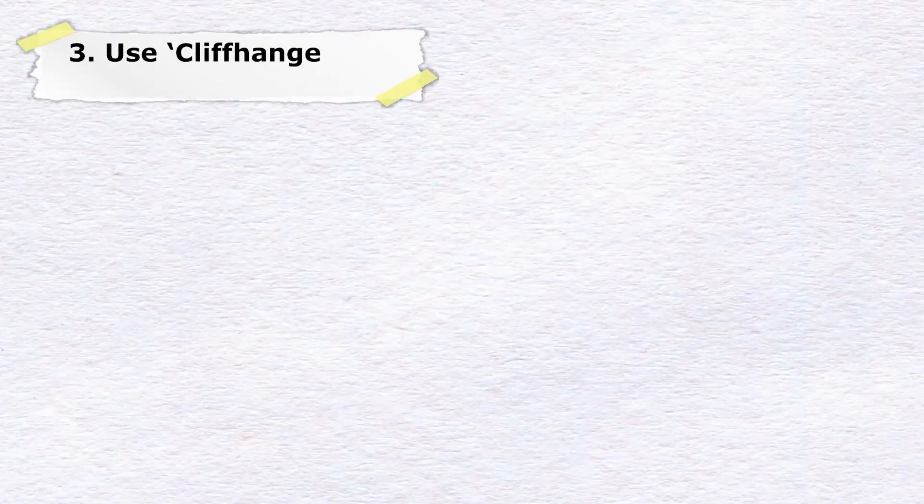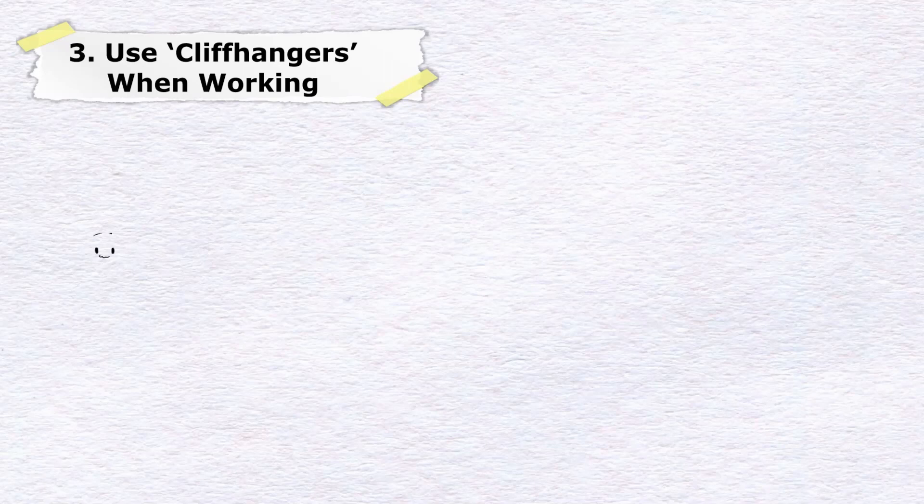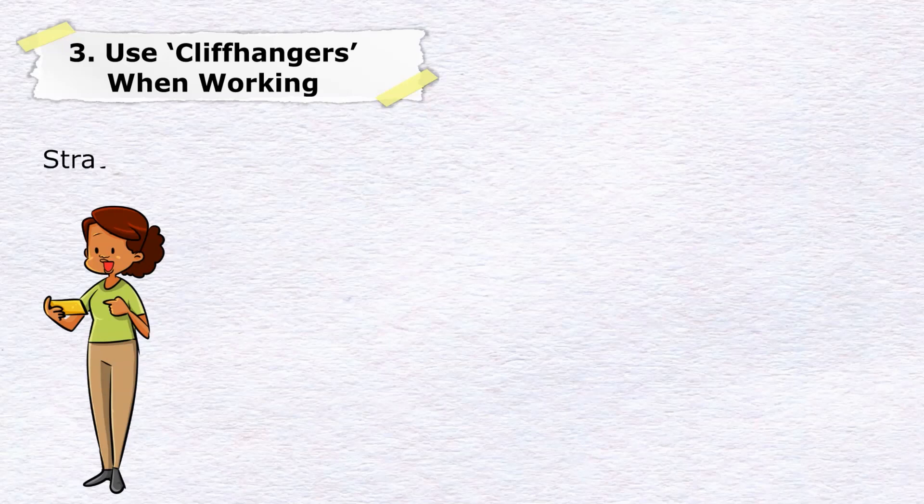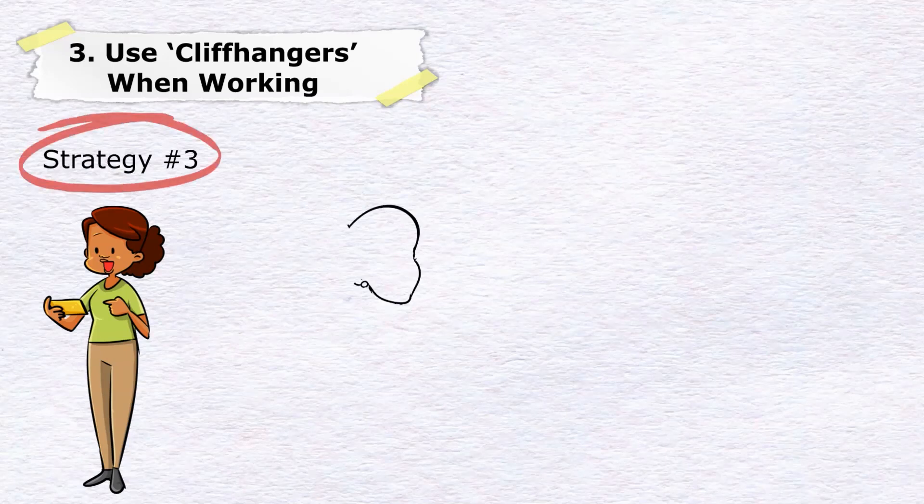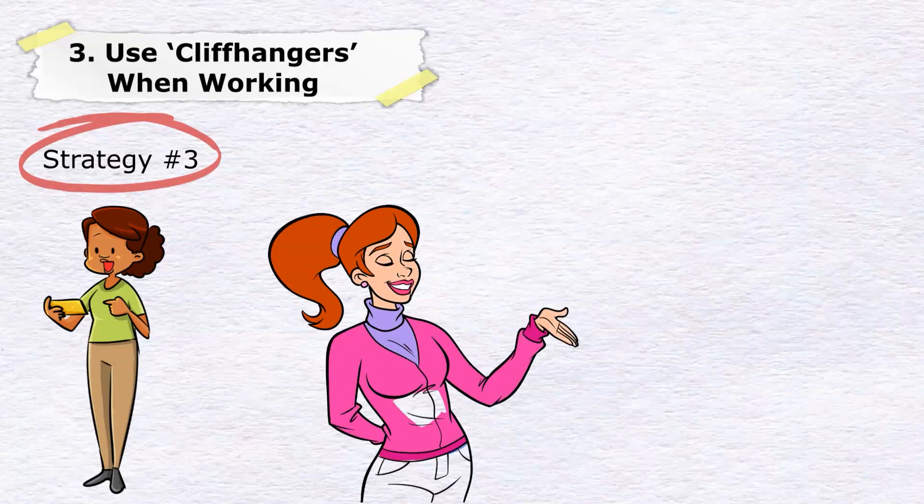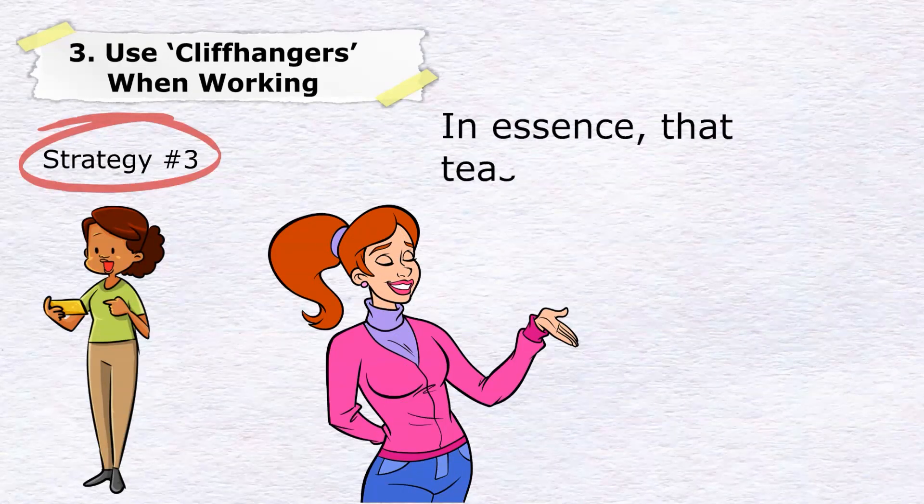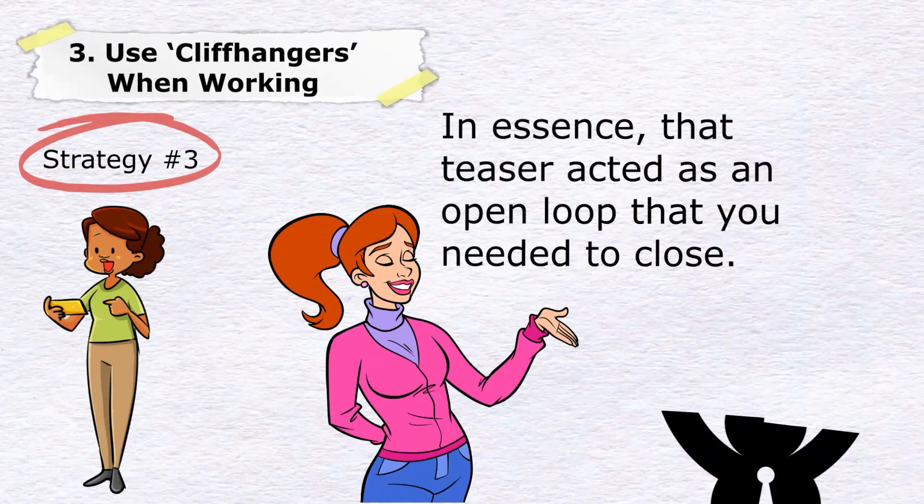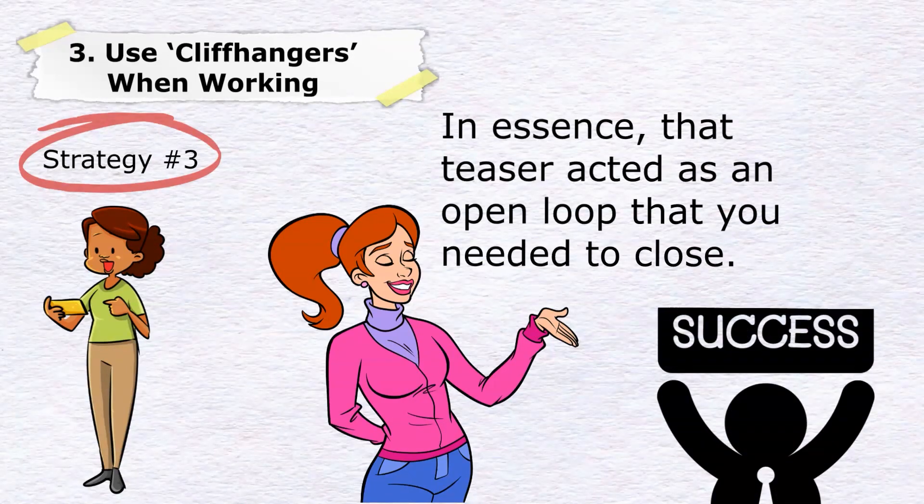Number three: use cliffhangers when working. Okay, it's confession time. Remember in the introduction where I told you to pay close attention to strategy number three? Well, that was an example of how we use the Zeigarnik effect when creating these videos. In essence, the teaser acted as an open loop that you needed to close. And if you're watching at this point, then this teaser has successfully worked.